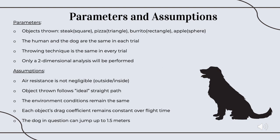For our assumptions, we're going to assume that air is not negligible in this case, no matter if we're outside or inside. The objects thrown are going to follow an ideal straight path every single time. The environment conditions are about roughly the same for each throw. Each object's drag coefficient will remain constant over the flight time. And the dog in question can jump to a maximum of 1.5 meters.